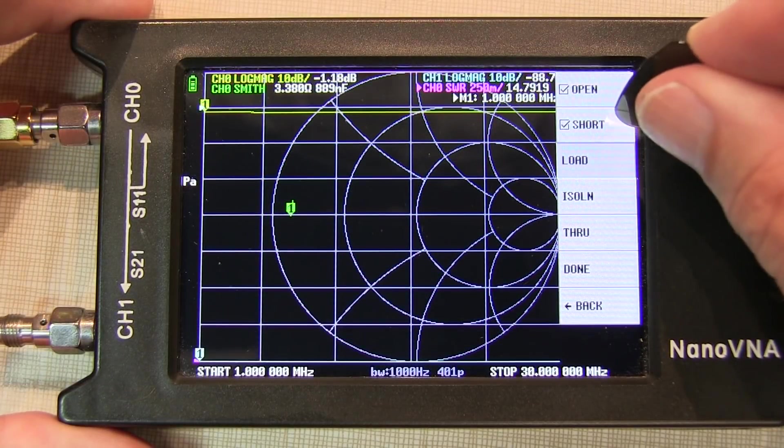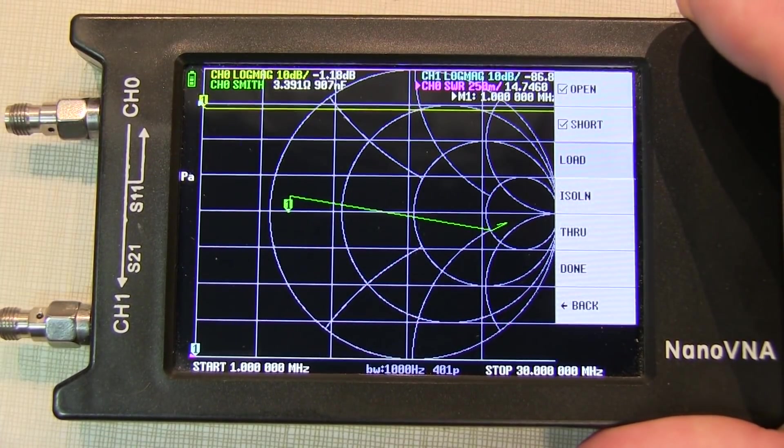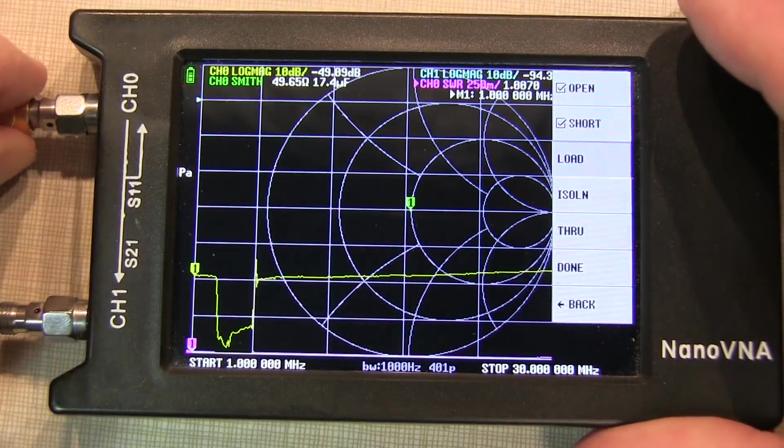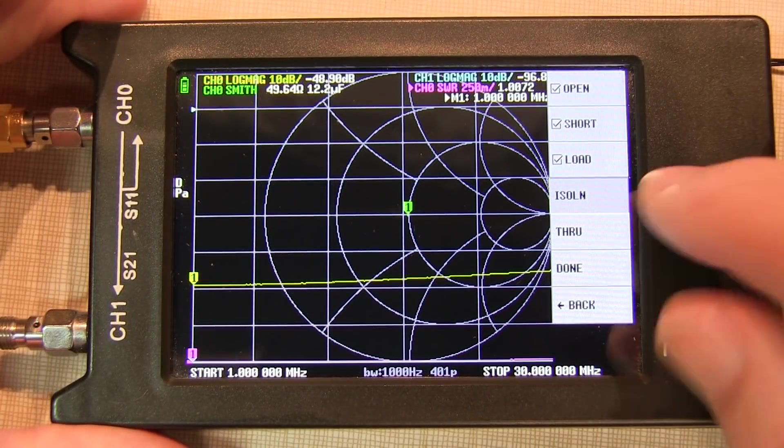And when that completes, you'll see it lights up for load. So we'll take our 50 ohm load and connect that to the input next and touch load.